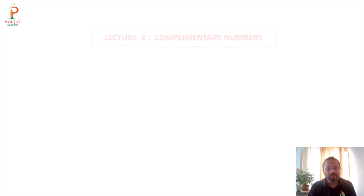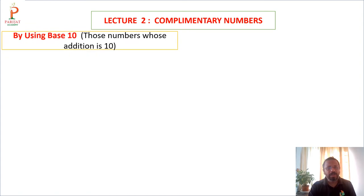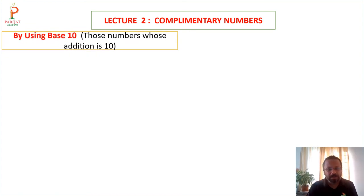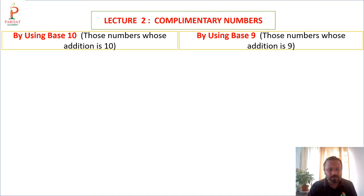Now let us look at complementary numbers. There are two types of complementary numbers: by using base 10, meaning those numbers whose addition equals 10, and by using base 9, meaning those numbers whose addition equals 9.